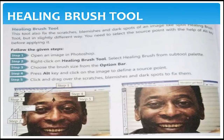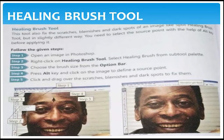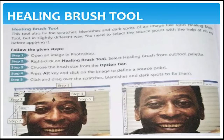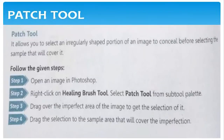Next one is healing brush tool. This tool also fixes scratches, blemishes, and dark spots of an image, like the spot healing brush tool, but in a slightly different way. You need to select the source point with the help of the Alt key before applying. That is the small difference between the spot healing brush and the healing brush tool.